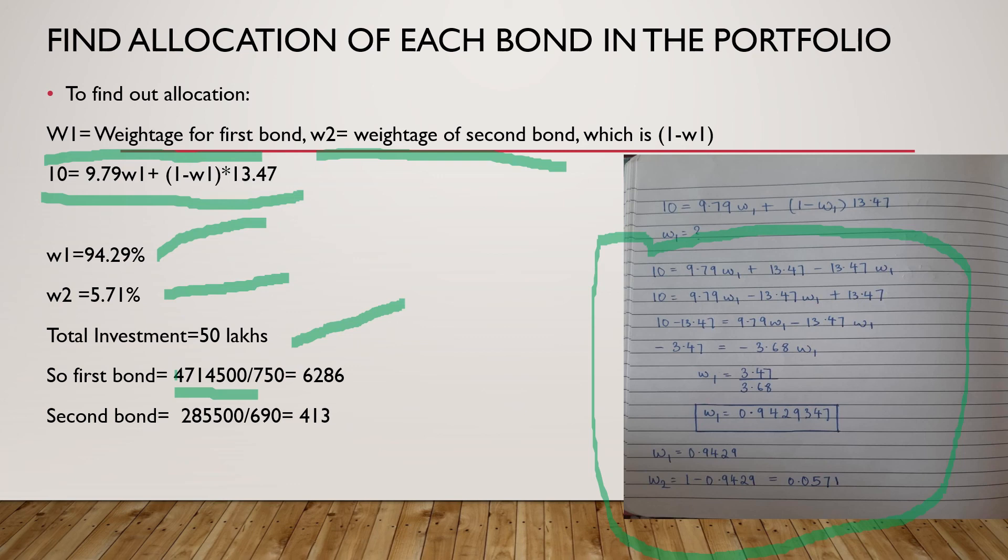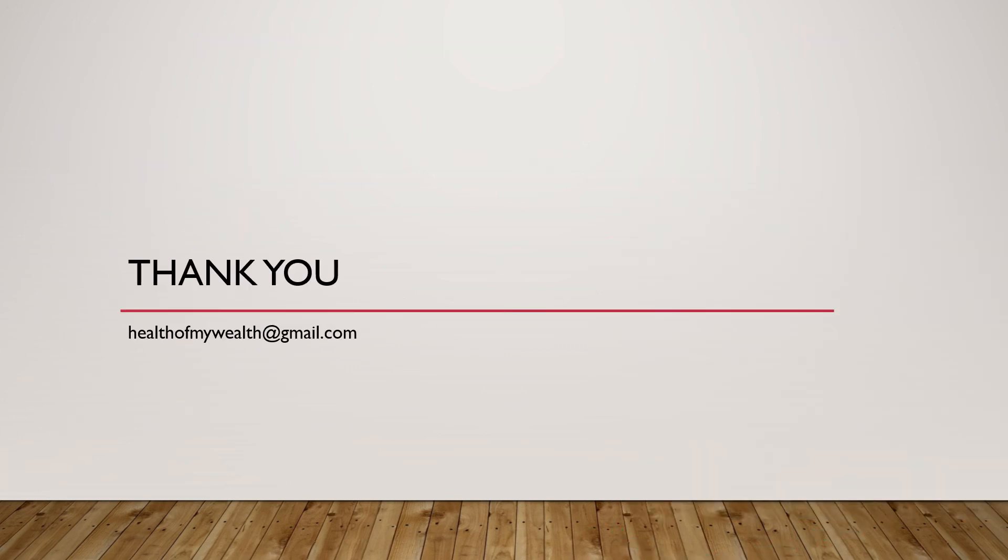This is how we arrive at the solution. So if you see the option which we had in the first slide where the problem was given, I think it is D which will be the answer. Through this method I hope this video has helped you get the sense of how to calculate duration and how to allocate bond portfolio based on duration.